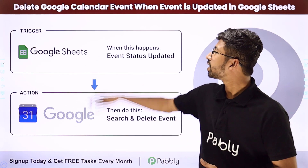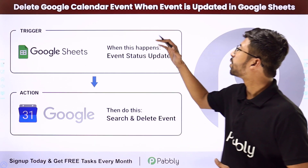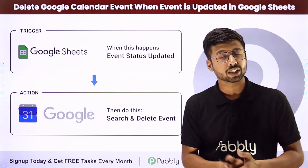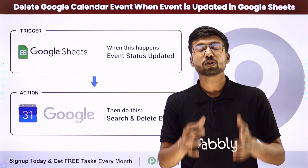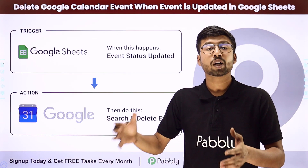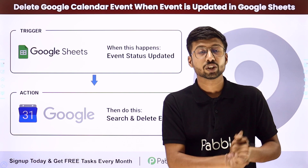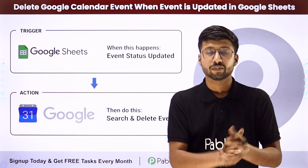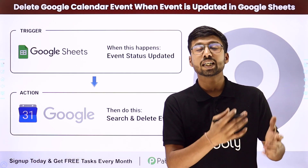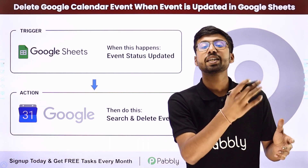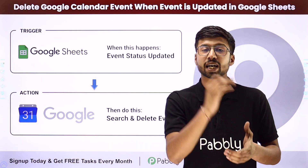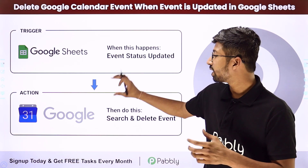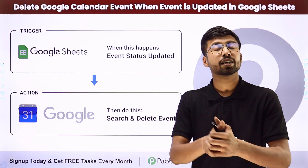In this video we are going to learn how to delete a Google Calendar event when an event is updated in Google Sheet. Suppose you have all the details of upcoming events from Google Calendar in a Google Sheet where your team members manage those events. Whenever a team member updates the status of an event in Google Sheet as cancelled or deleted, you want to delete that same event from Google Calendar as well.